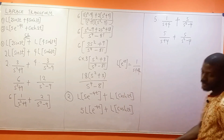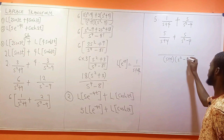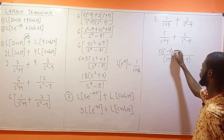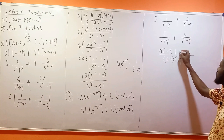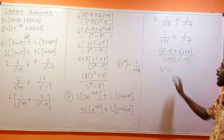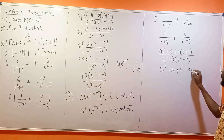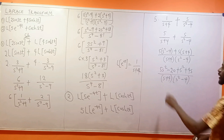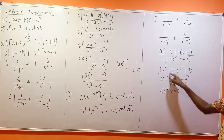Now taking the LCM of these two terms: multiply them together to get (s + 4)(s² - 4) as the denominator. Dividing s plus 4 leaves s² minus 4, so we get s times (s² - 4) which expands as: 5 times s² is 5s², 5 times minus 4 is minus 20, then s times s is s², and s times 4 gives 4s.